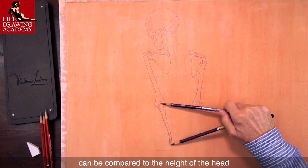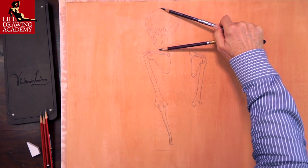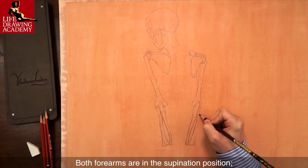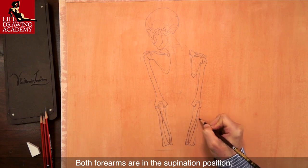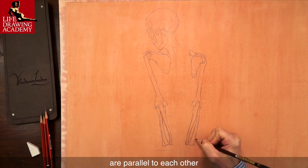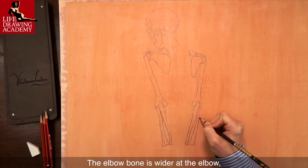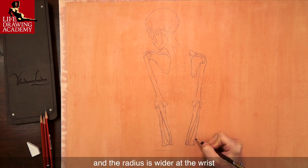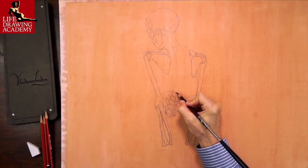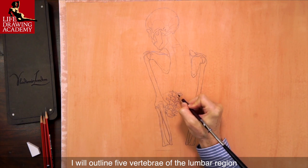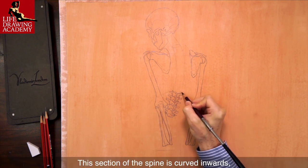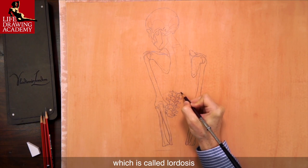The length of the elbow bone can be compared to the height of the head. Both forearms are in the supination position. The elbow bone and the radius are parallel to each other. The elbow bone is wider at the elbow, and the radius is wider at the wrist. I will outline five vertebrae of the lumbar region. This section of the spine is curved inwards, which is called lordosis.